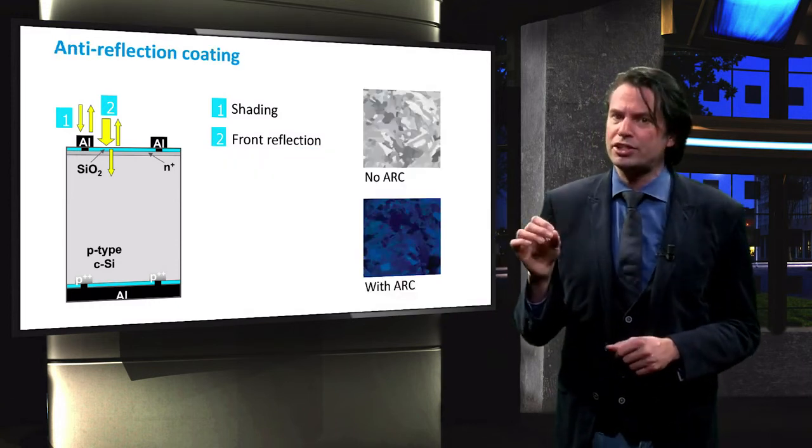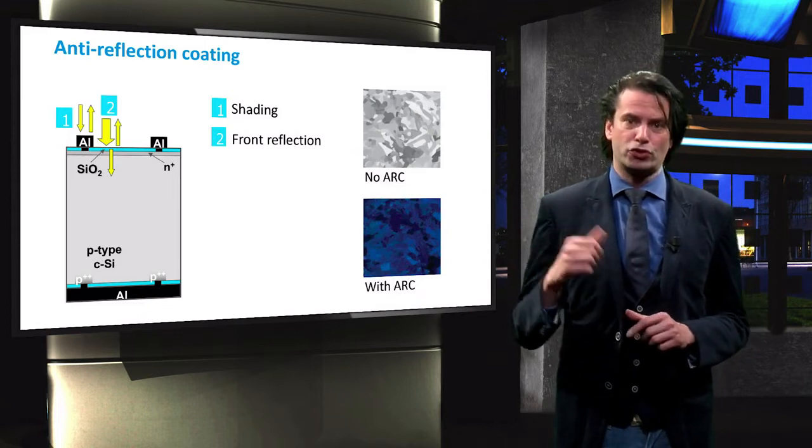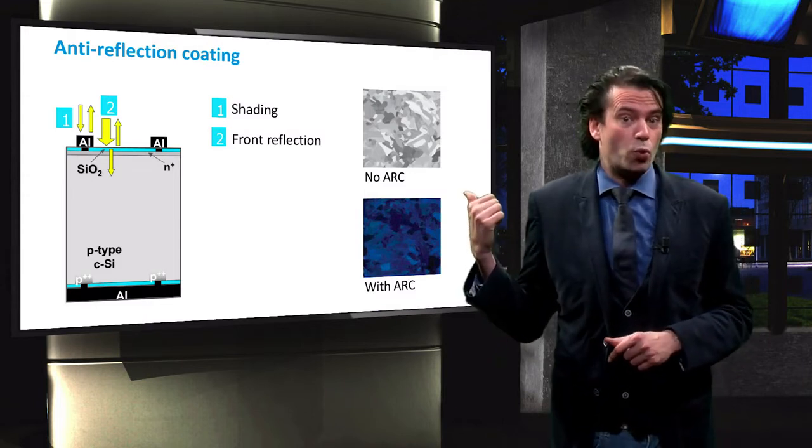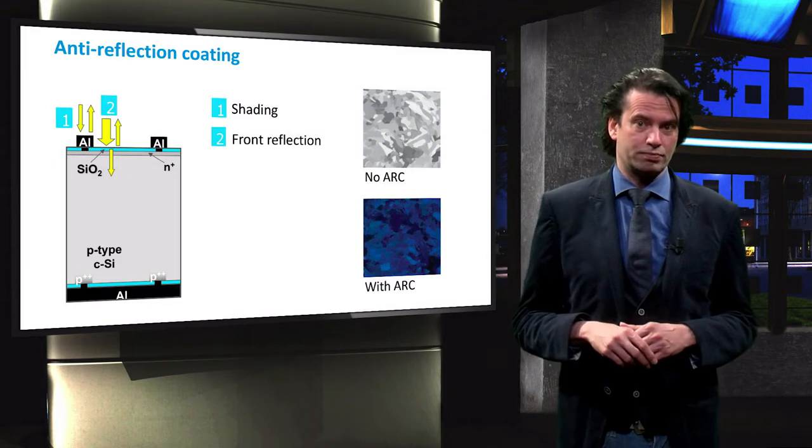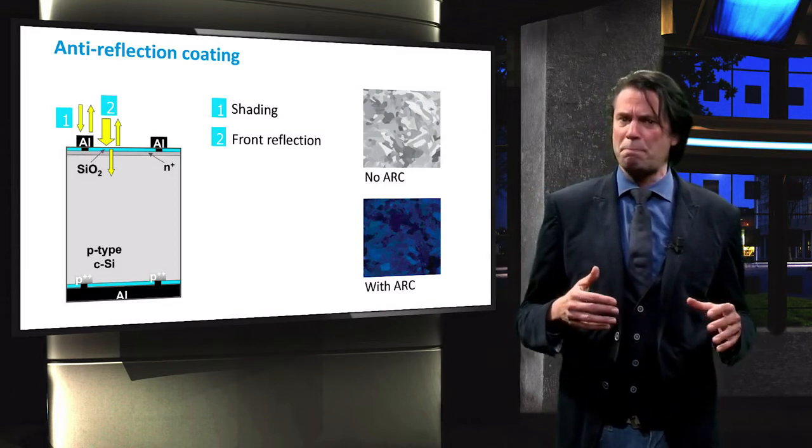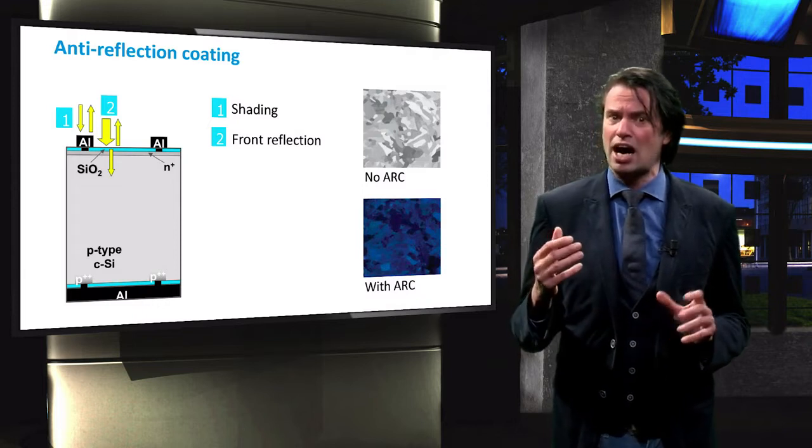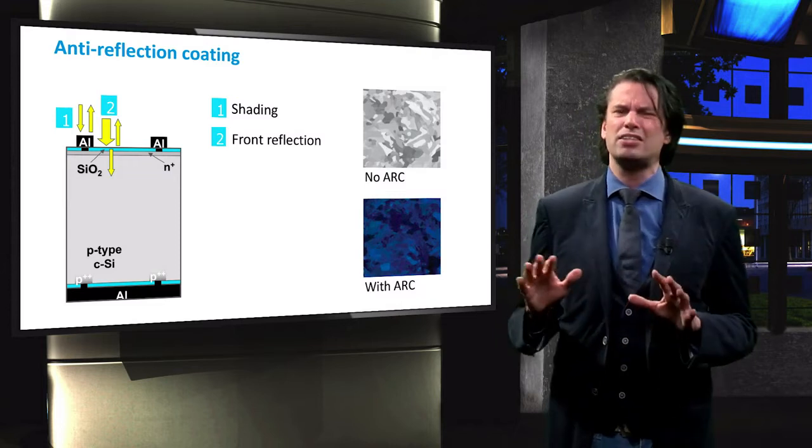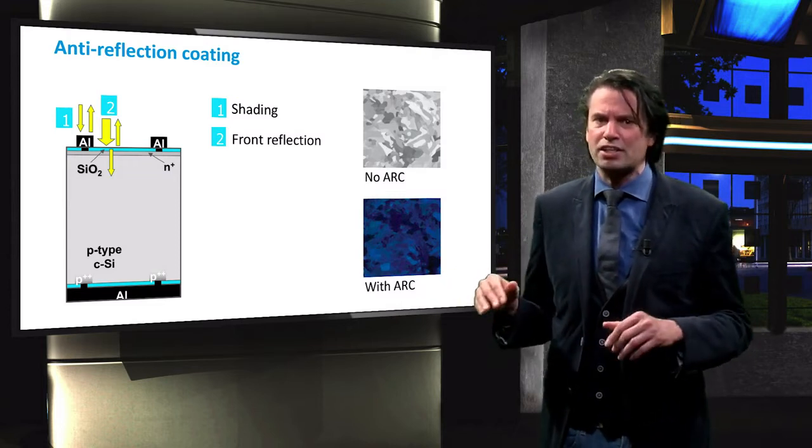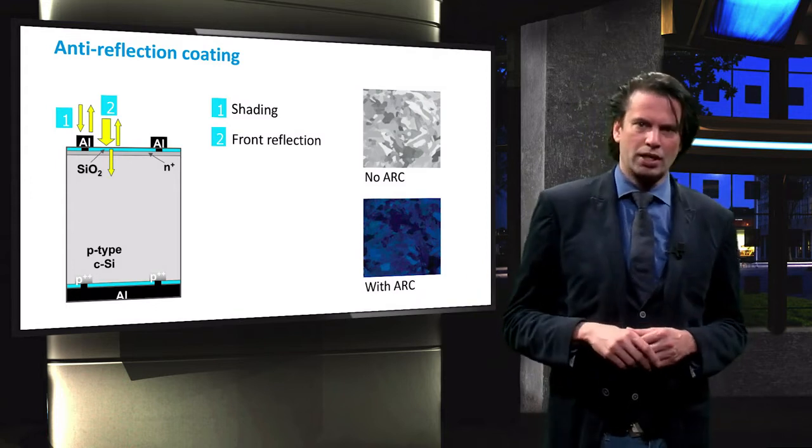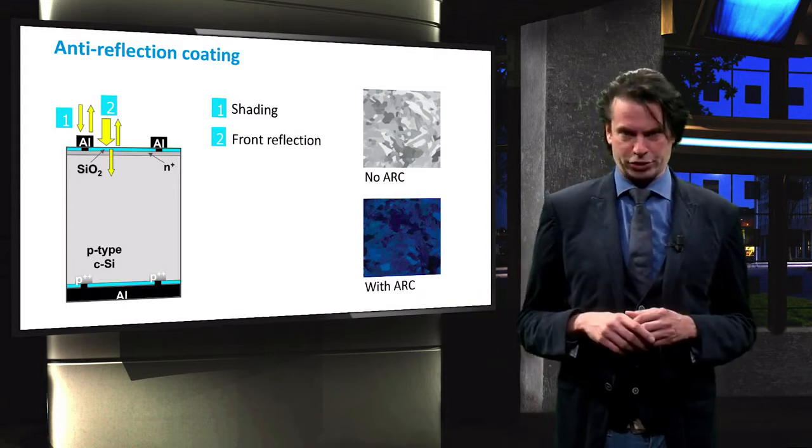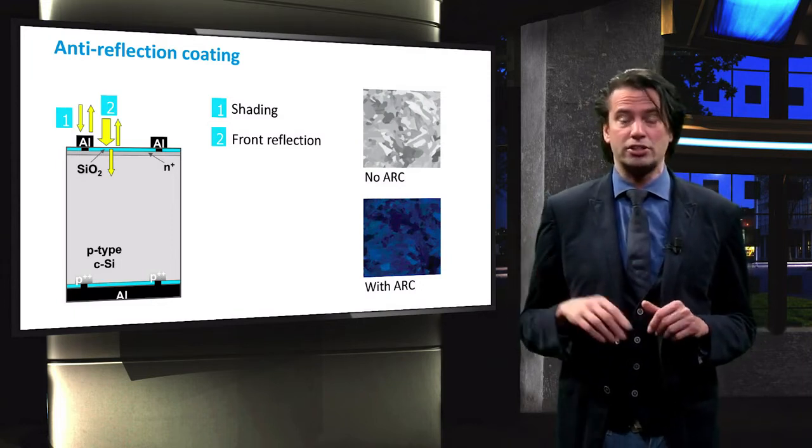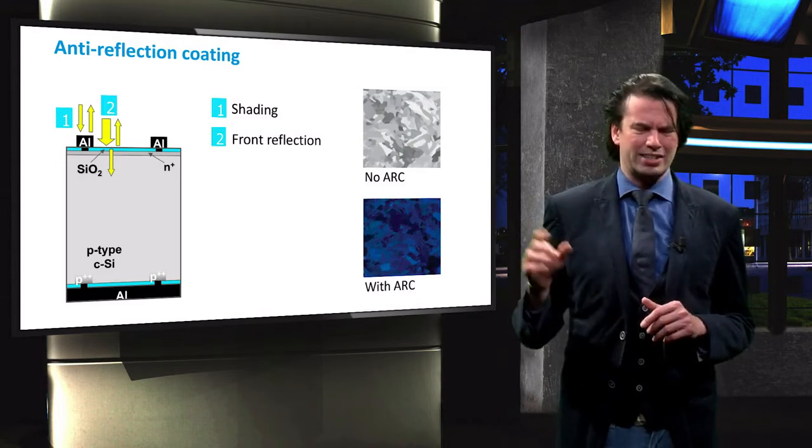Introducing an anti-reflection coating minimizes the reflection at the front surface of the solar cell. These pictures show a multi-crystalline silicon wafer with and without an anti-reflection coating. The wafer without anti-reflection coating appears silverish, which means it is highly reflective. A similar wafer with anti-reflection coating has a dark blue appearance, meaning the reflected light intensity is much lower. There are different approaches to making an anti-reflection coating. Several concepts will be discussed in the sections on Fresnel equations, interference in solar cells, and light scattering.